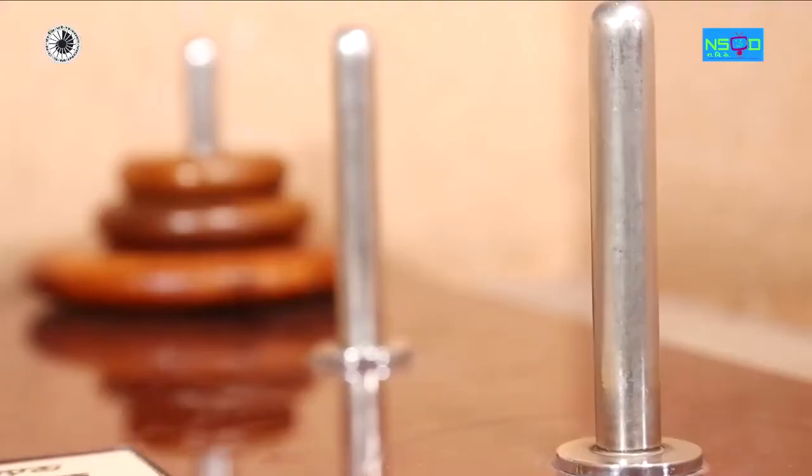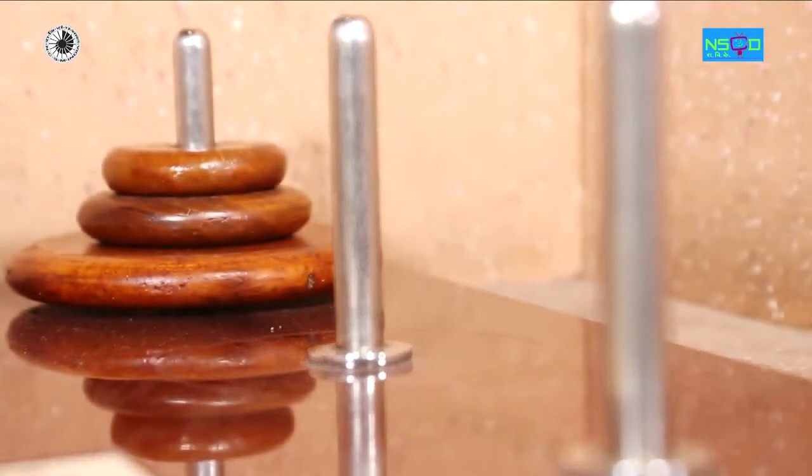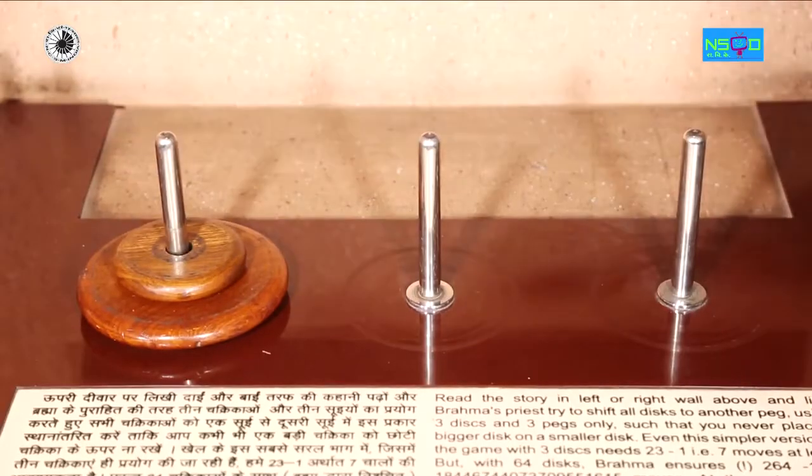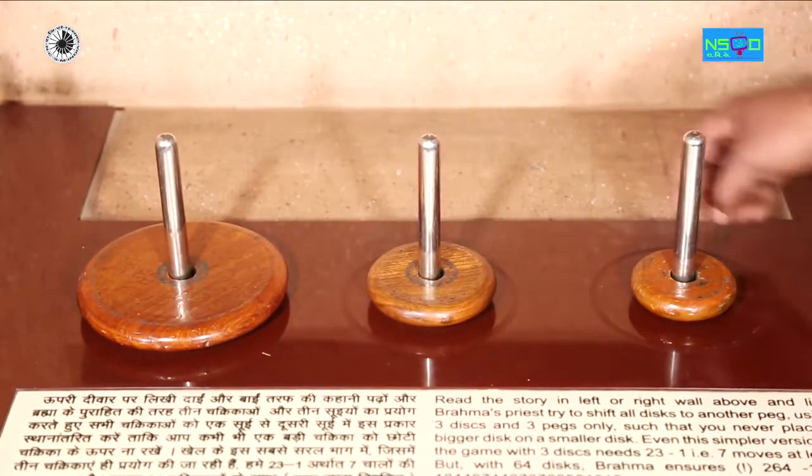Brahma's disc. Here are three pegs and three discs placed on one of the pegs in order of reducing diameter. The puzzle is that you have to shift all three discs in the same order on the last peg.